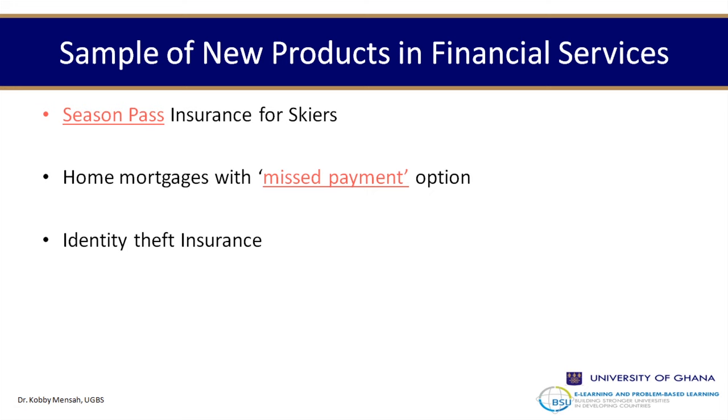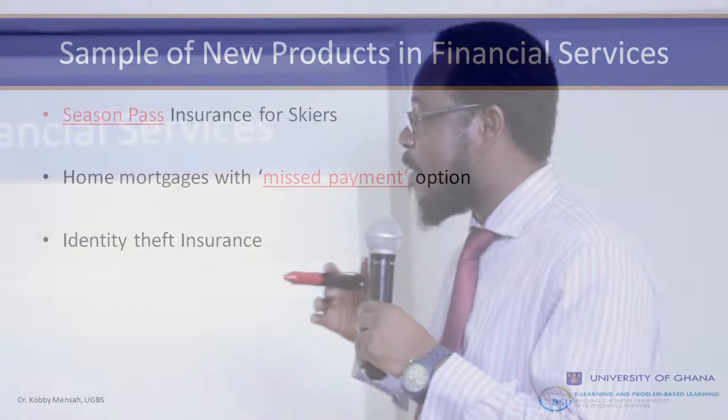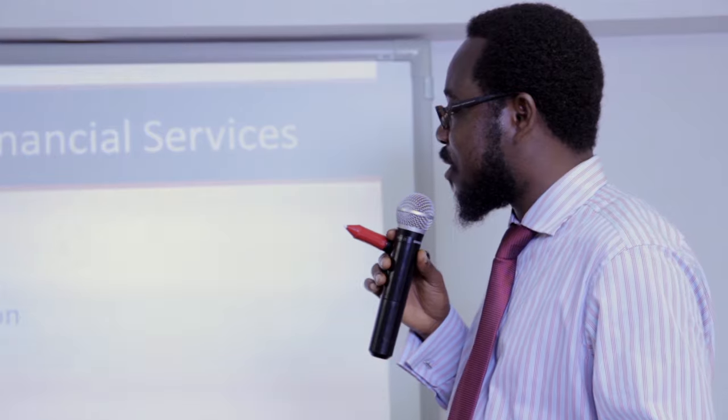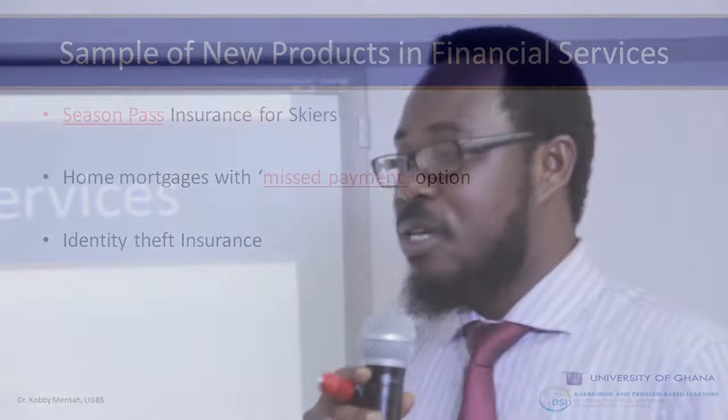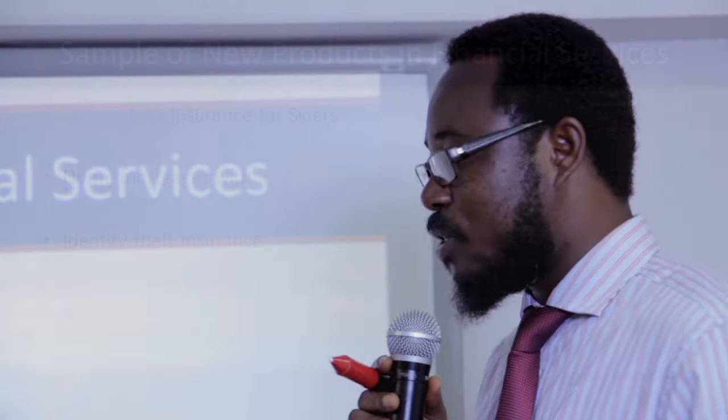Samples of new products in financial services: over the years we have seen quite a number of new products. We've seen modification and co-branding of financial services products. A typical example is a season pass insurance for skiers. Skiing is a fun activity but can be risky, so insurance packages have been introduced. People have had season passes for popular skiing locations, targeted towards people who love skiing.